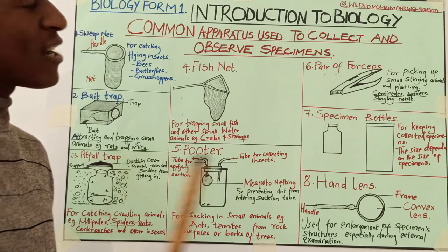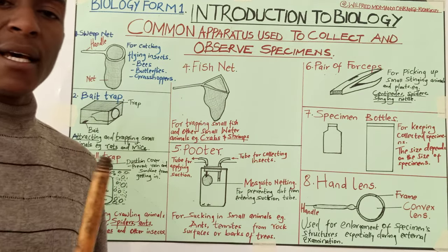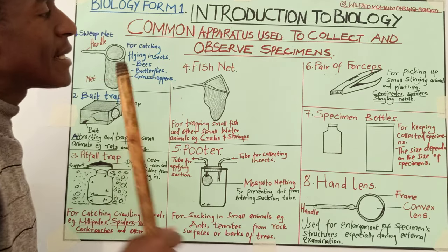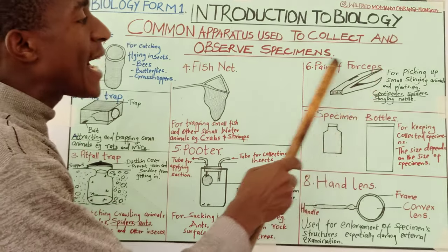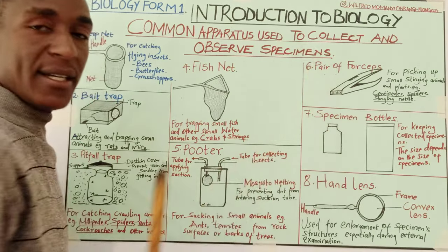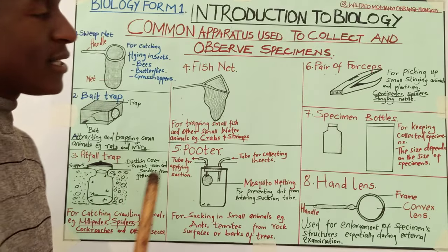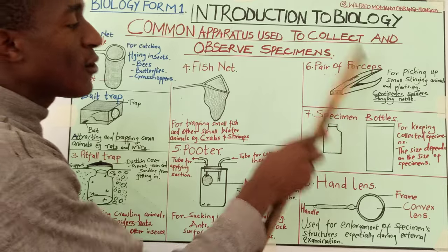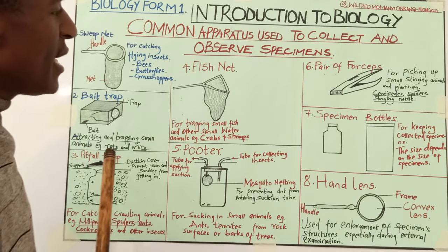A common mistake when referring to this apparatus: most students forget and say 'forceps' without 'a pair.' You may be penalized, so it is good to say 'a pair of forceps.'